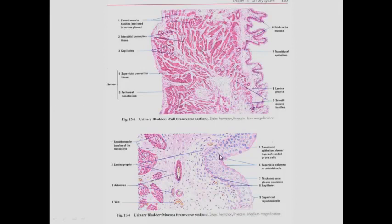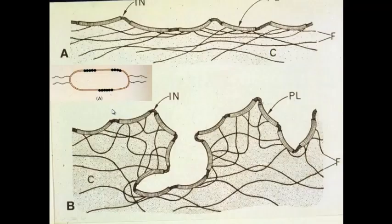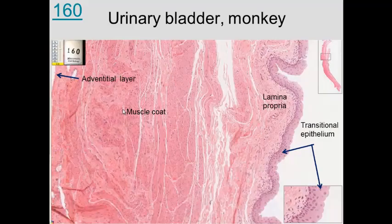Then we have the urinary bladder — transitional epithelium and muscle again. We can see here a similar structure: lamina propria, transitional epithelium on the lumen, a muscle coat of smooth muscle, and adventitial tissue.